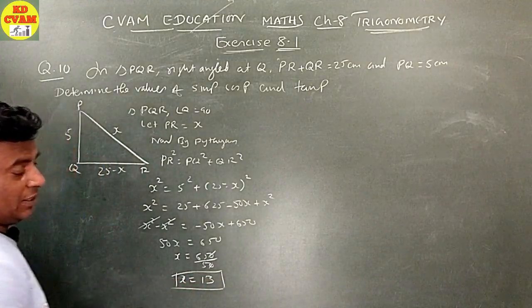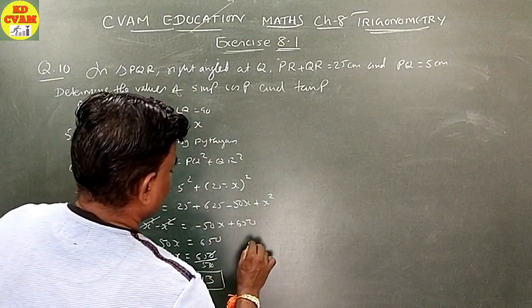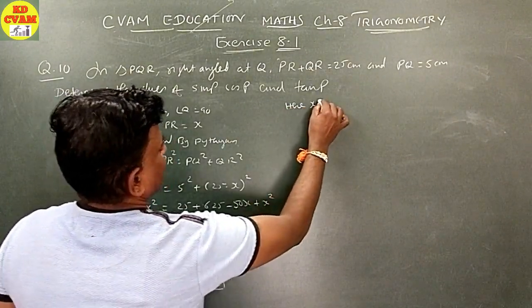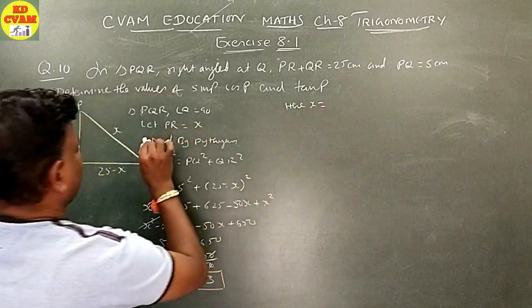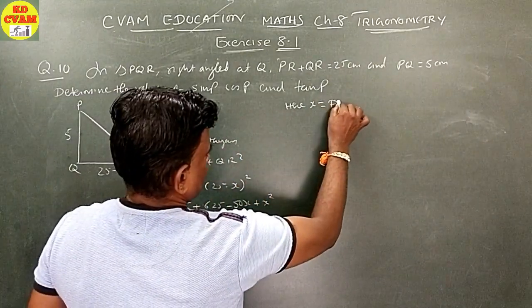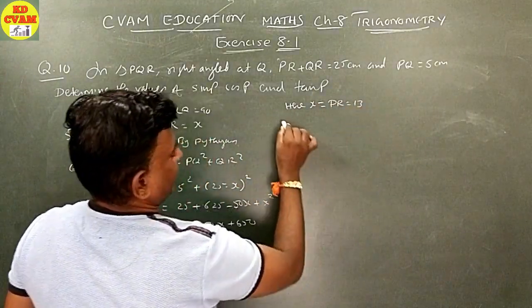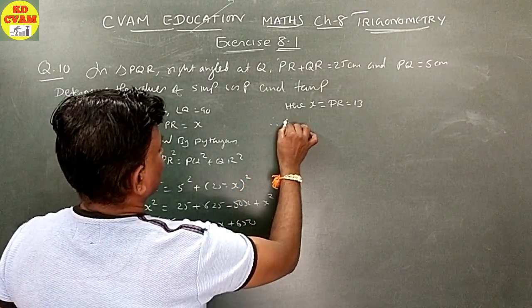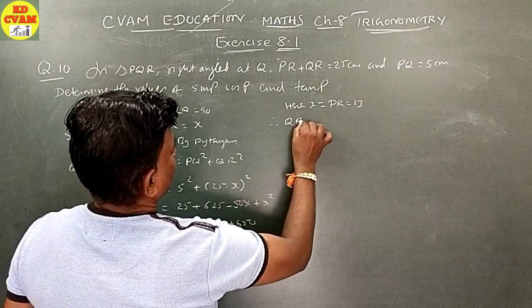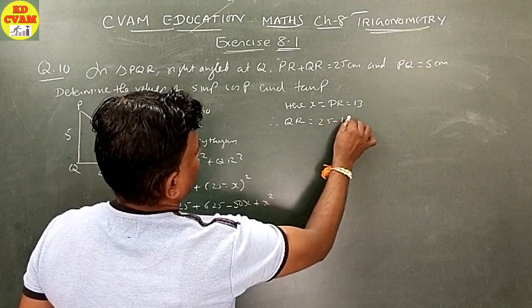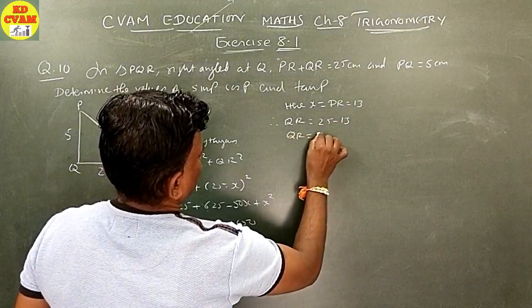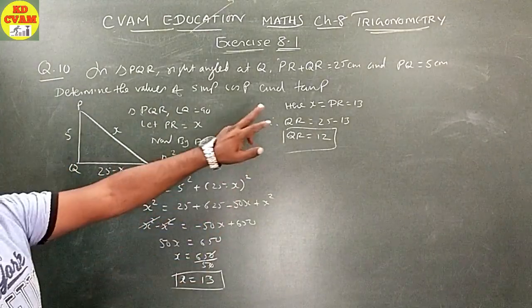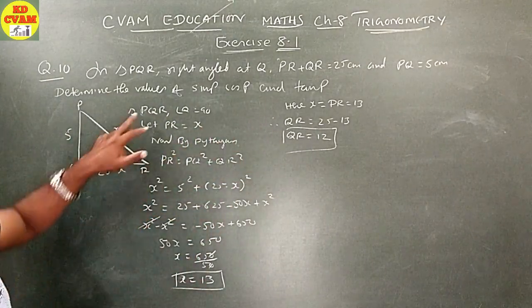X equals PR equals 13. Therefore QR equals 25 minus 13 equals 12. So PR equals 13 and QR equals 12, and PQ equals 5.